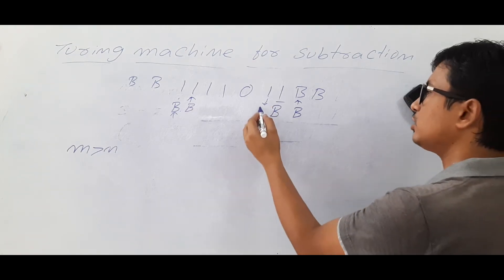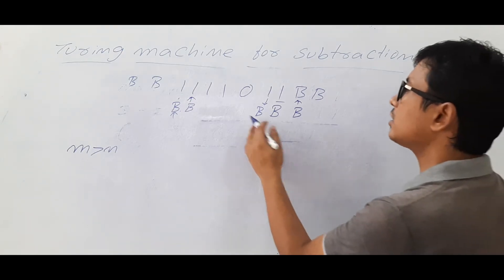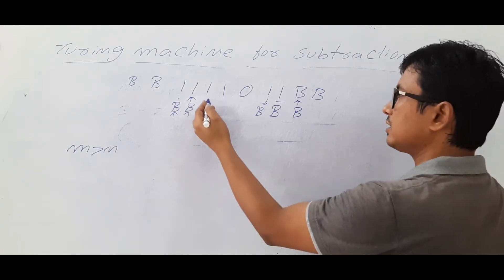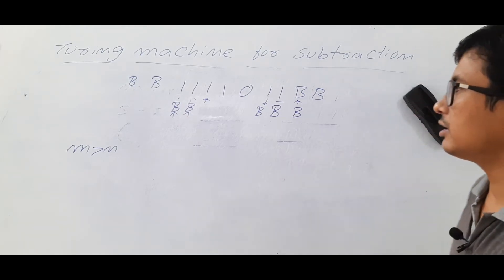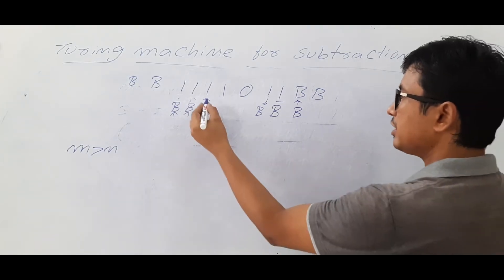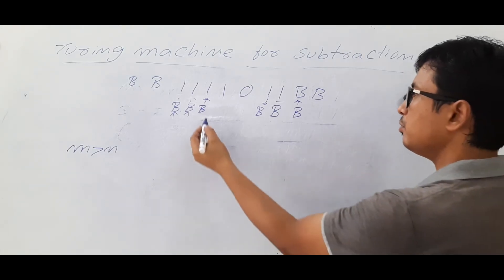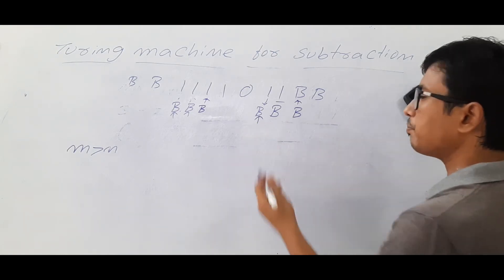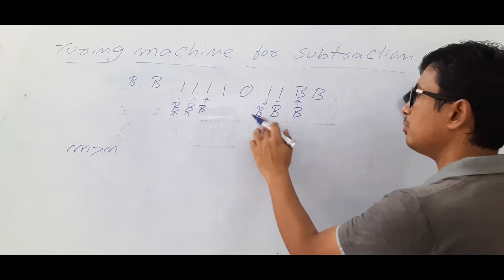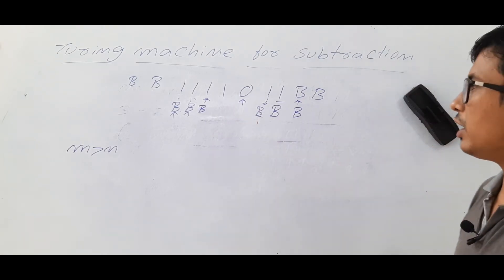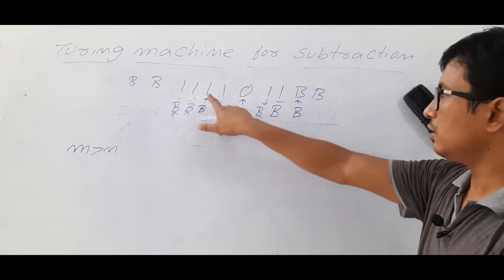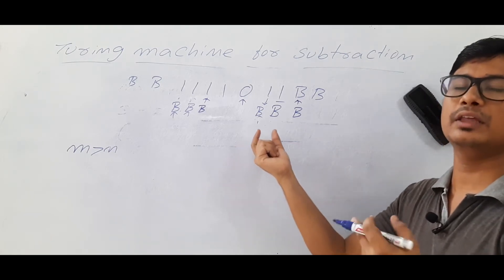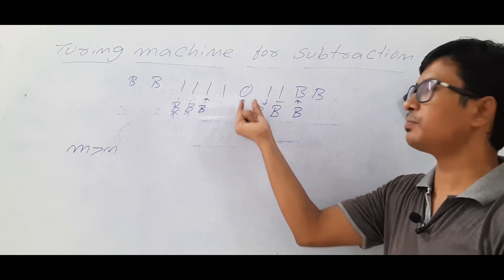I keep moving right until I get a blank. If I get a blank I make it a blank and move to the left. If I find a 1 I modify it to a blank and move left, until I get a blank. Then I move right. The tape head is now pointing to the next 1 in n. If it is a 1, I modify it to a blank and move right, continuing until I get a blank.